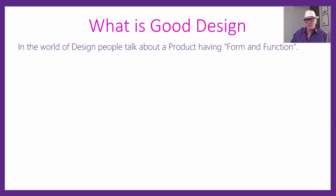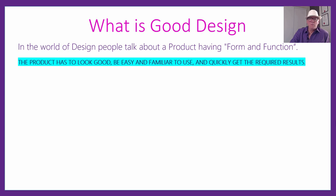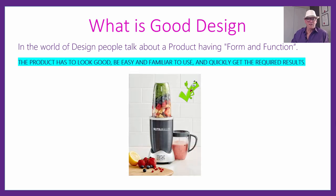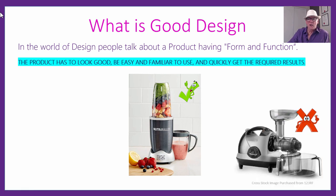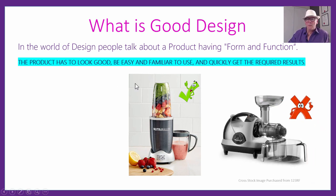In terms of products, people talk about form and function. The product has to look good, be easy and familiar to use, and quickly get the required results. One of my top examples for form and function is the Nutribullet — such a great idea with the cup on top that you turn upside down to get your drinking cup with your smoothie. Really straightforward and simple to use. By contrast, a friend's juicer had to be pulled apart into a million pieces to clean, which doesn't tick the boxes on form and function like the Nutribullet does.